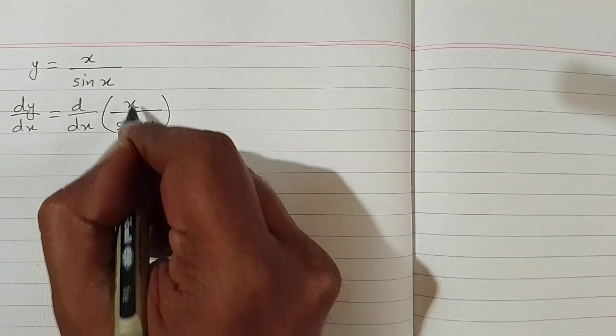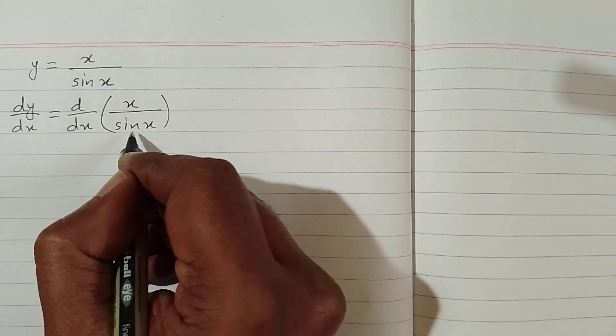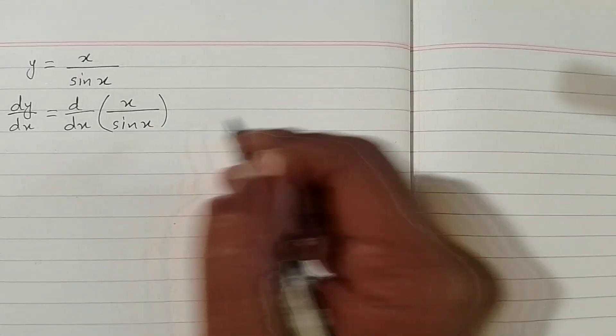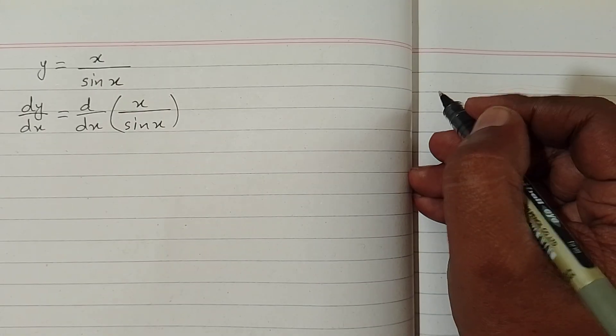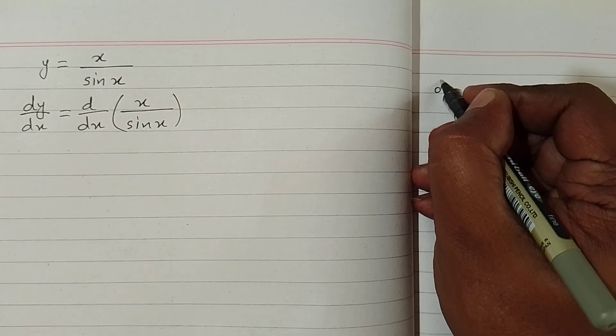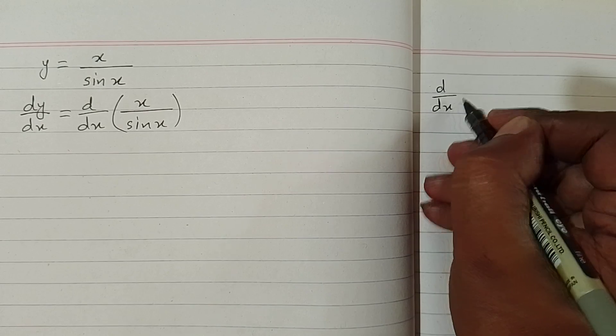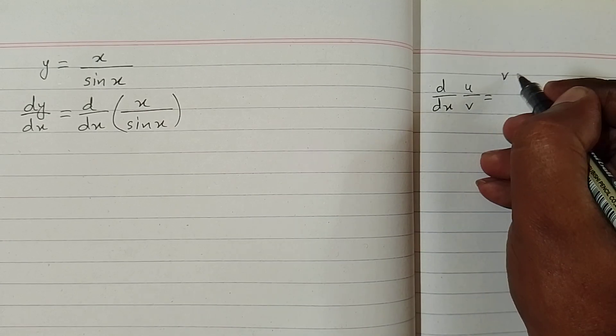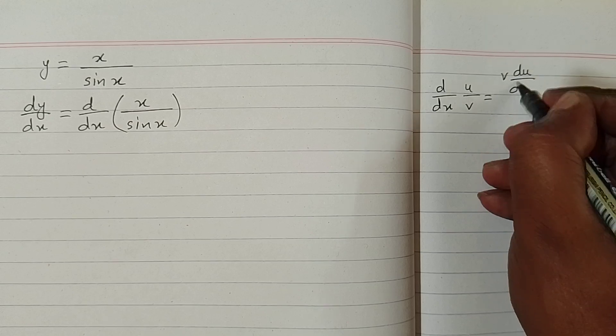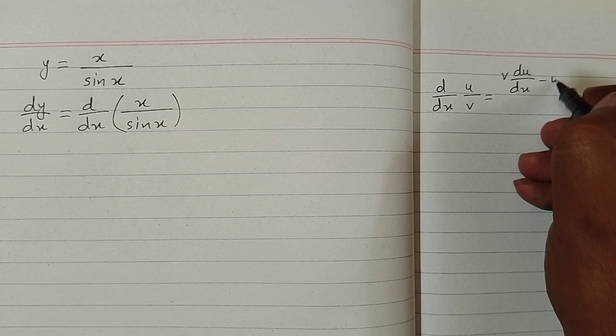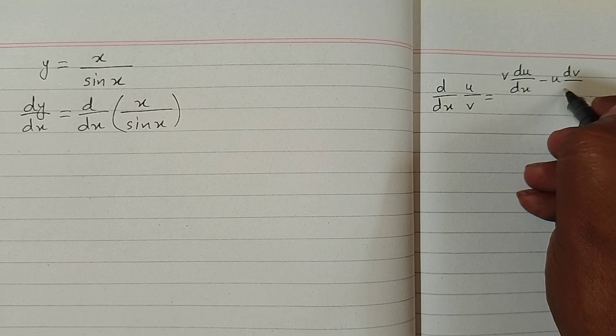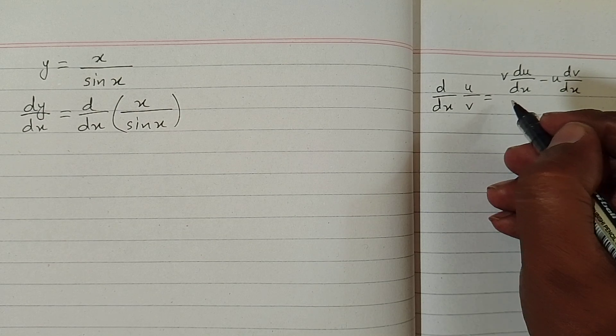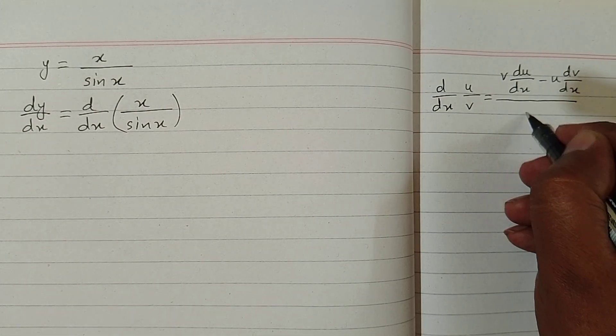Now we can see that we have a fraction x over sin x, so we can apply the quotient rule of differentiation, which is d/dx of u over v equals v times derivative of u minus u times derivative of v over v squared.